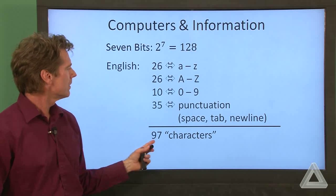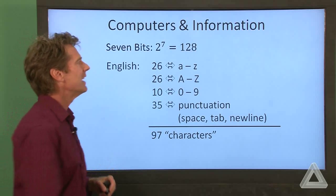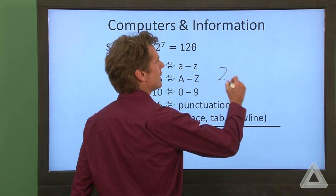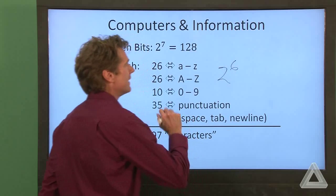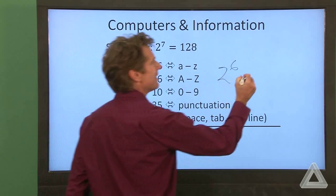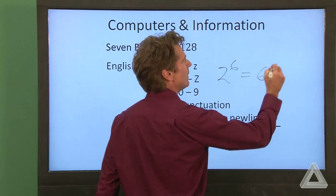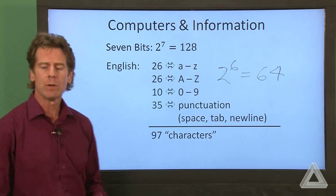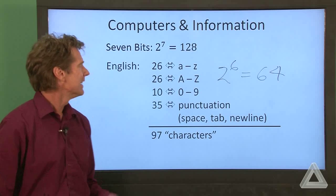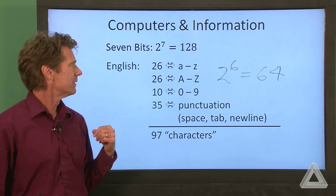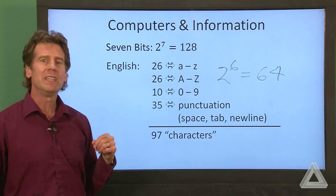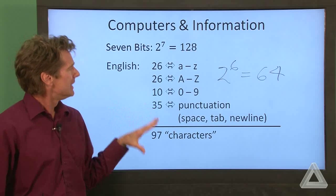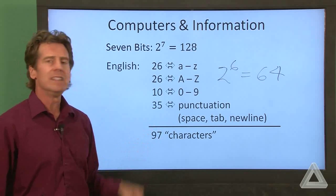And you might think, well, that's less than 128. How about if we use six bits? So that would be two to the sixth. That's one bit less. That gives us 64 unique combinations. So that's not enough to handle what we want to do in English, in written English. So let's stick with seven bits and try and map different combinations of bits to these characters.